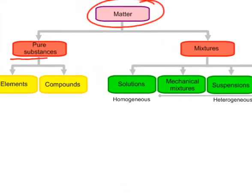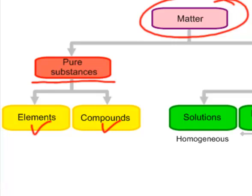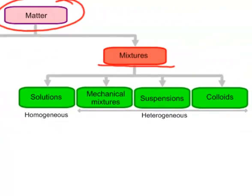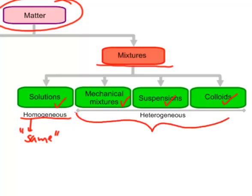If we begin up here at the top and say let's look at all the matter out there in the universe, how can we break it down? We can break matter down into what we call pure substances versus mixtures. Our pure substances further break down into two categories called elements and compounds. Mixtures break down into solutions, mechanical mixtures, suspensions, or colloids. Notice that solutions are homogeneous—homo means the same, so when you look at a solution everything looks the same. These other three are heterogeneous—hetero means other, so in these mixtures you can see other things, not just one thing.